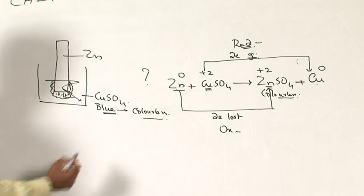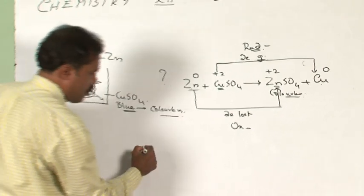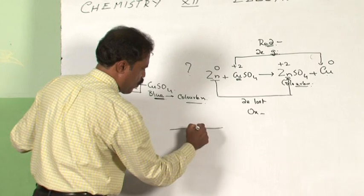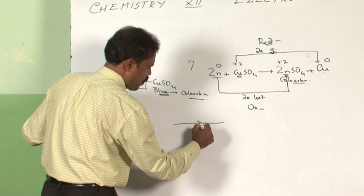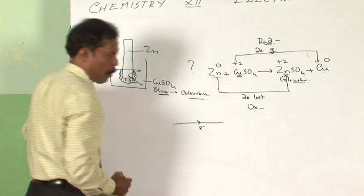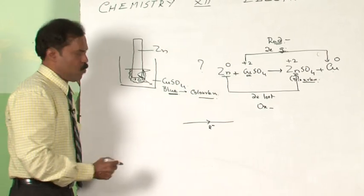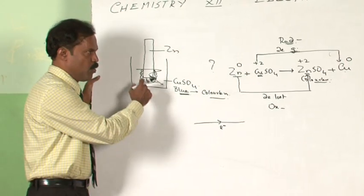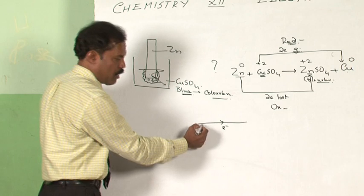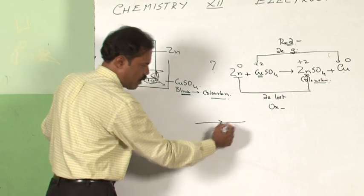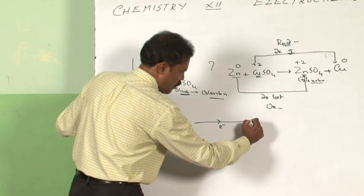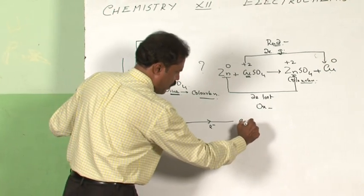As you all know, electricity is the flow of electrons. So if somehow you can manage electrons flowing through a wire, what you get is electricity.